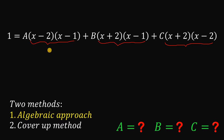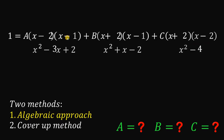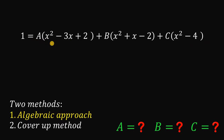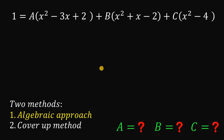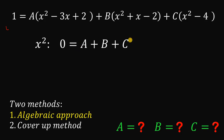We multiply those binomials: the first gives x squared minus 3x plus 2, the second gives x squared plus x minus 2, and the third gives x squared minus 4. So: 1 equals A times (x squared minus 3x plus 2) plus B times (x squared plus x minus 2) plus C times (x squared minus 4). Now let's use comparison of coefficients.